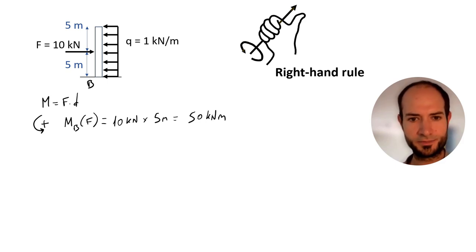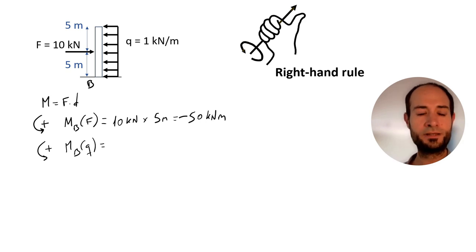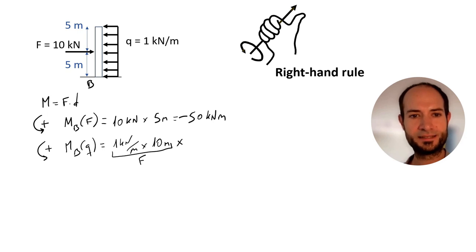And now, Mb due to the line load. We have 1 kN per meter times 10 meters because it is applied to the full height. As before, this is our f in the equation. And the distance is going to be at the center of the rectangle, so it's going to be 5 meters.